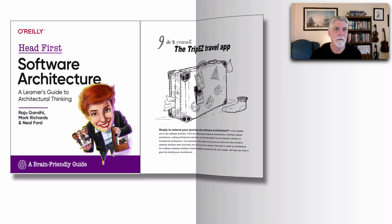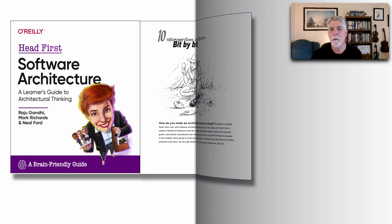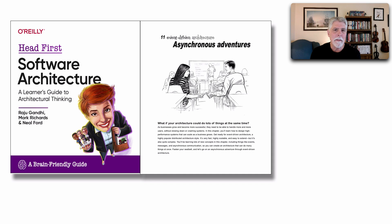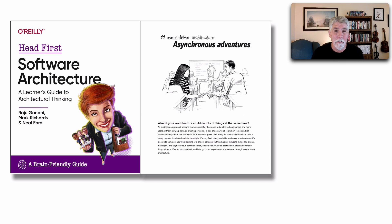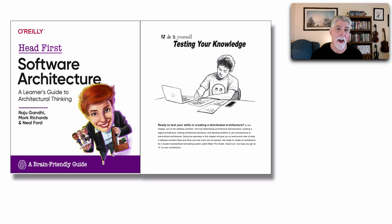Then we switch over to the distributed architectures. In chapter ten we talk about microservices, and in chapter eleven, event-driven architecture. We take a different approach with these two chapters than we did in Fundamentals, diving a little deeper into each of these architecture styles and showing where they intersect and the differences between microservices and event-driven architecture. Then we have another do-it-yourself chapter written specifically for you to create a distributed architecture for another kind of problem.